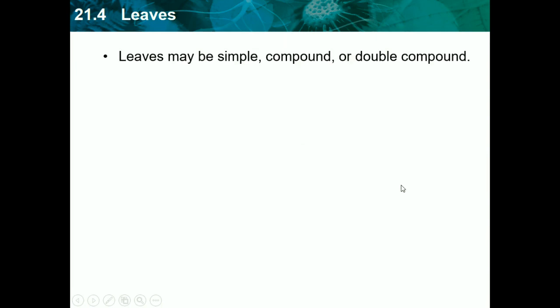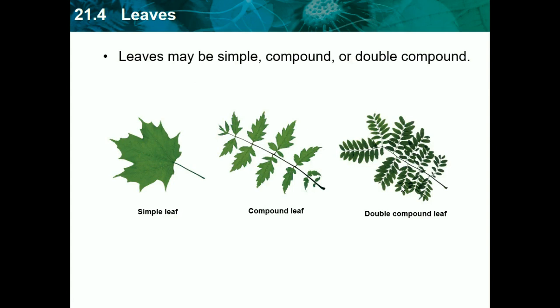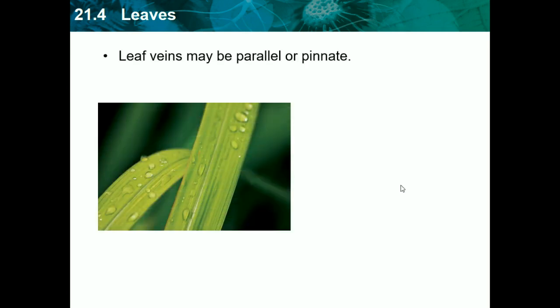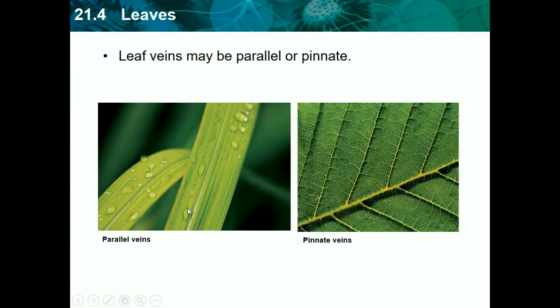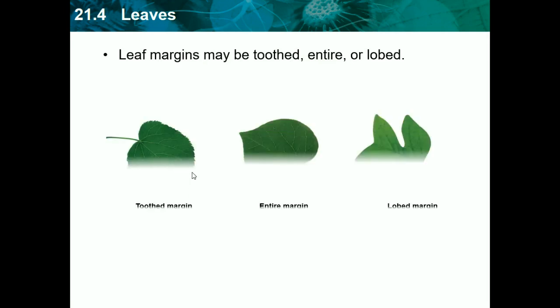Leaf veins may be parallel or pinnate. Parallel veins, as we learned, are monocots, while branching network-like or pinnate veins are dicots. Most leaves are specialized systems for photosynthesis. There are two types of mesophyll cells, both containing chloroplasts: palisade mesophyll absorbs sunlight, and spongy mesophyll connects to stomata. You don't need to know those two types specifically, but know that all leaves contain chloroplasts, which make leaves green and are the organelles that absorb sunlight for photosynthesis.